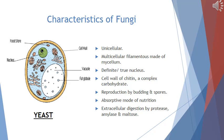Certain fungi are unicellular — for example, yeast, which is famously used in pizzas and bakery items. There are also multicellular fungi made up of thread-like filament structures called mycelium. They have a true nucleus with a true nuclear envelope present around the DNA molecule. The cell wall is made up of chitin, a complex carbohydrate that is very strong and flexible. Fungi reproduce by budding and spores, and have an absorptive mode of nutrition — they secrete enzymes and carry out extracellular digestion using proteases, amylase, and maltase.